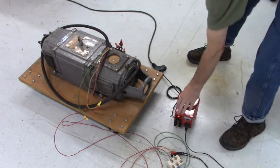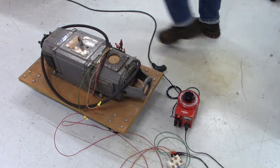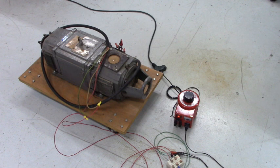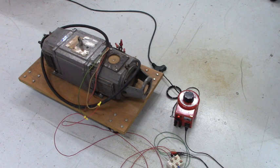There we go, variac is turned on, let me go get my meter, and we'll adjust that variac so that we have the DC voltage for the field.